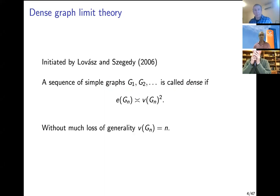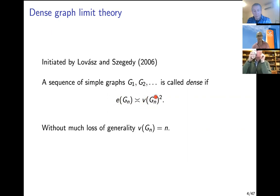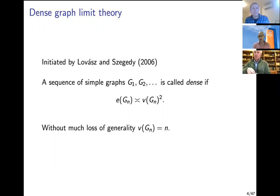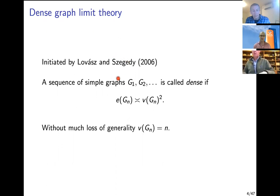Dense graph limit theory was initiated by Lovász and Szegedy in 2006. A dense graph sequence is a sequence of graphs where the number of edges scales like the number of vertices squared — so there are a lot of edges. While these graphs are not realistic since most real networks are not that dense, the theory is mathematically most elegant in this dense regime.